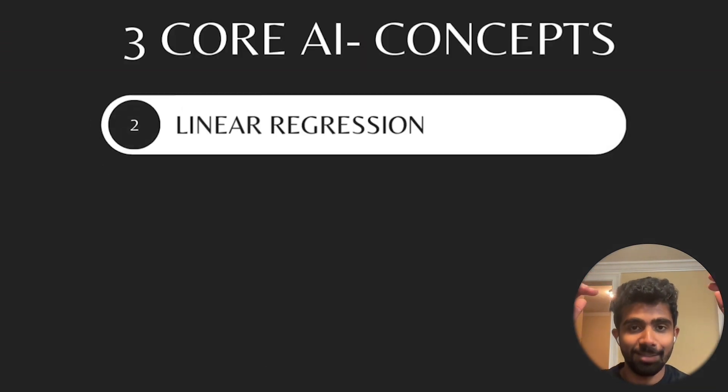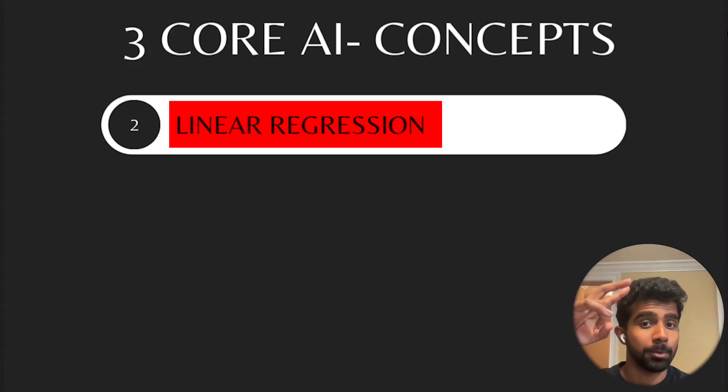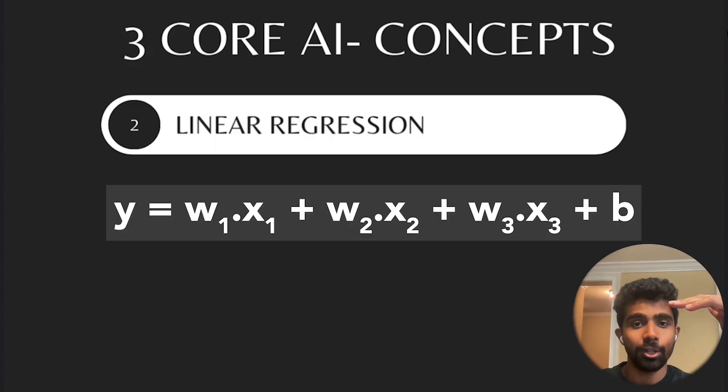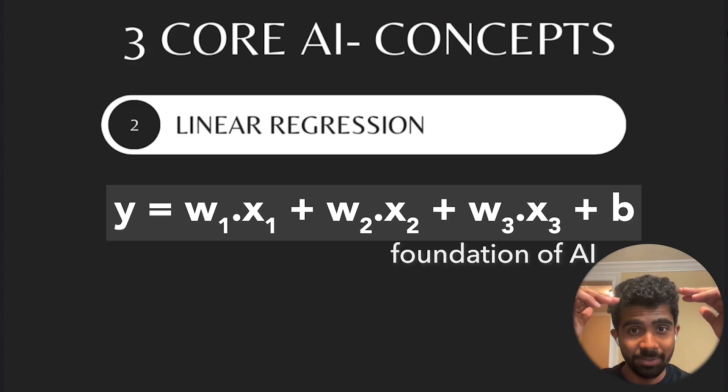Onto concept number two. If you made it through concept number one, that's awesome. Try to hang in for the rest of the video because it's going to be a lot easier from here on out. Number two is linear regression. And the good news is we already talked about it in concept number one. This equation that we were talking about, that's linear regression. It's a simple, unsexy model from statistics, but it's actually the foundation of AI. So you've got to understand linear regression.